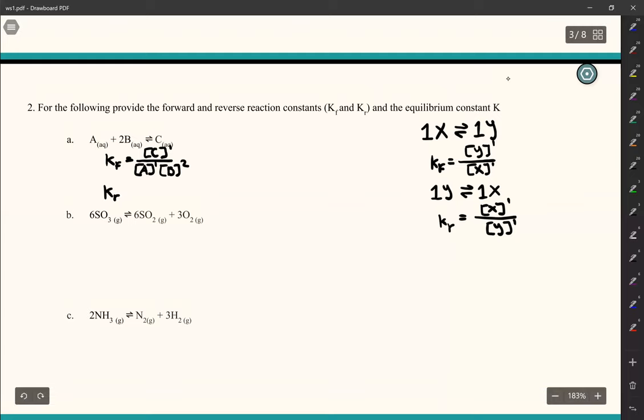The Kr would just be the opposite of that, where we put the reactants on the top. So that would be concentration of A to the first power, concentration of B to the second, all over concentration of C to the first power. The definition of equilibrium constant K is equal to K forward over K reverse. This is the same for all of the equations.